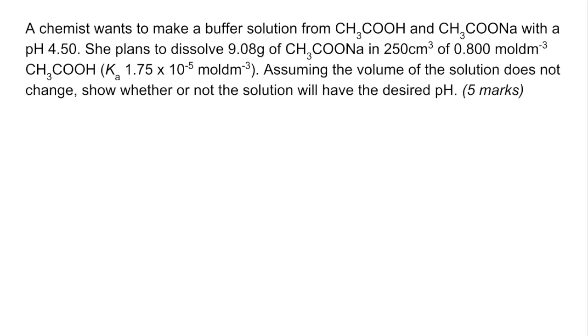So here's the question. A chemist wants to make a buffer solution from ethanoic acid and sodium ethanoate with a pH of 4.5. She plans to dissolve 9.08 grams of the salt into 250 cm³ of 0.8 moles per dm³ ethanoic acid, and there's the Ka value for the acid. Assuming the volume of the solution doesn't change, show whether or not the solution will have that desired pH. That was worth 5 marks.